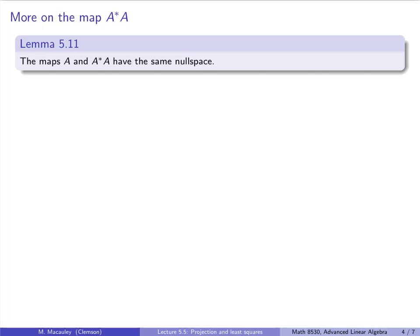Let's now turn our attention back to the important map A*A, which we saw a few slides ago. This appears throughout applied math and statistics. One reason is that it is self-adjoint, as we've seen. But now I want to focus on another key property: it has the same null space as A. Say A goes from X to U and A* goes from U to X. So A*A goes from X to itself, whereas A goes from X to U. Even though the images live in different spaces, their null spaces are both subspaces of X.